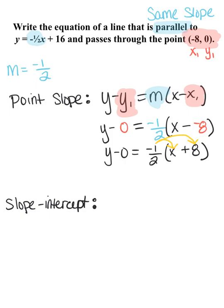Now we need to distribute that negative 1/2 to both the x and the positive 8. On the left side, you notice you have y minus 0 - it's okay to just write that as y equals. Now we're going to distribute the negative 1/2 to the x for negative 1/2 x, and negative 1/2 times 8 is negative 4.